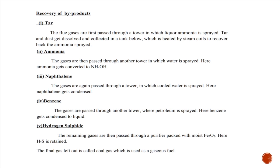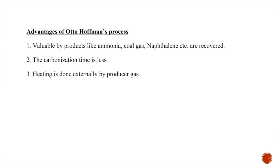To summarize, recovery of byproducts covers tar, ammonia, naphthalene, benzene, and hydrogen sulfide in the order T-A-N-B-H — do not miss this order. To score seven marks, write about: why we use the Otto Hoffman process, a diagram, the working process, recovery of byproducts, and the advantages. The advantages include: valuable byproducts are recovered, carbonization time is less, and heating is done externally by producer gas.